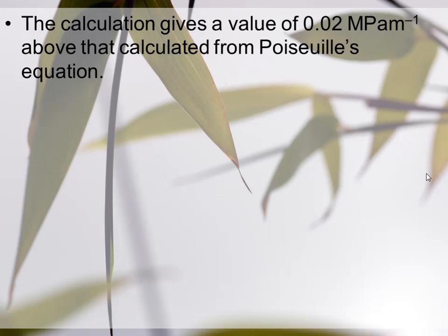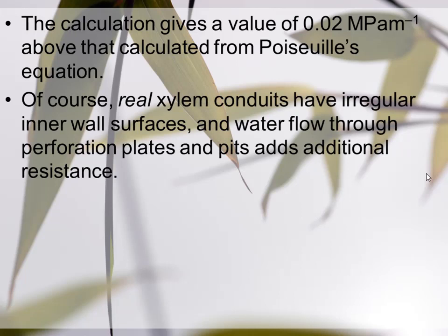The calculation gives a value of 0.02 megapascals per meter from Poiseuille's equation. Real xylem conduits have irregular inner wall surfaces and water flow through perforation plates and pits adds additional resistance. However, measurements show the actual resistance is greater by approximately a factor of 2, giving about 0.04 MPa per meter — still very close to the ideal value, so the difference is negligible.